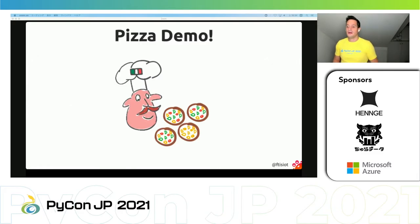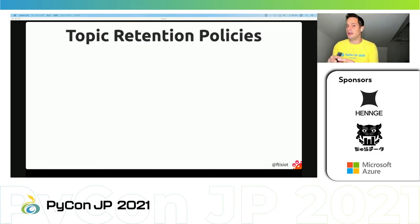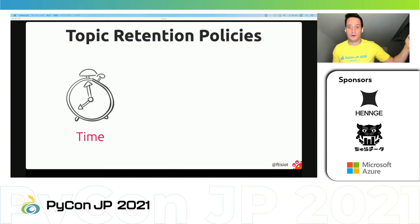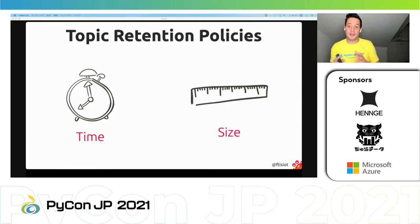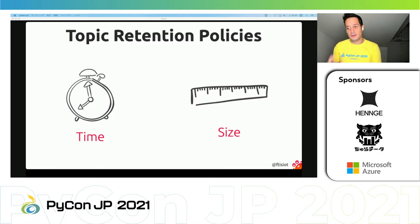Now let's move back to slides. We said we can push data to Kafka and Kafka will keep it. However, we may want to keep data in Kafka forever or only for a limited amount of time. We can tell Kafka how long to keep data in two ways: either by time — keep data for six months, two hours, or forever — or by size — keep data in the topic until it reaches 10 gigabytes, then delete the oldest chunk and let the topic grow again. You can also use both.